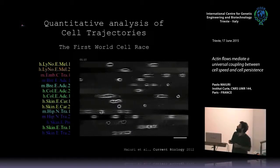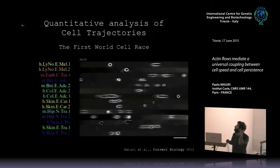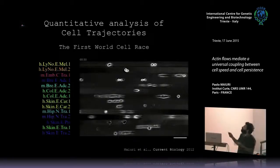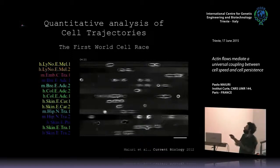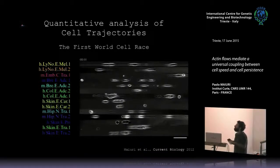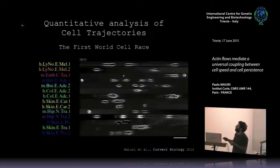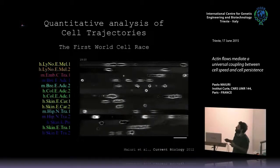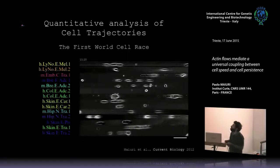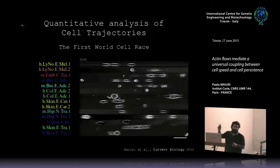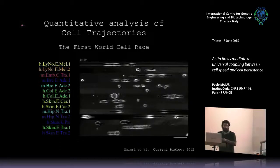That is the kind of data that we have. As you can see, you have cells of different shapes. Some cell types just move and divide. Some cell types are very spread and long. Some cell types are very small and fast. So really, you can have a plethora of phenotypes.